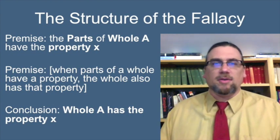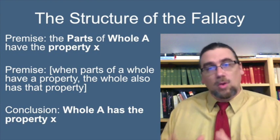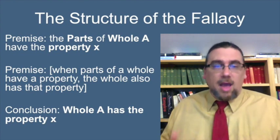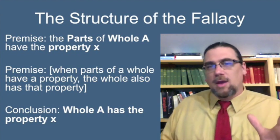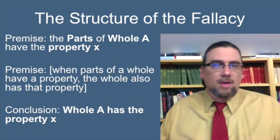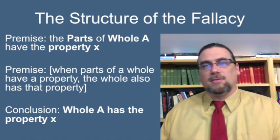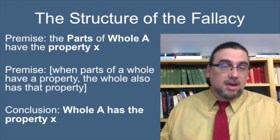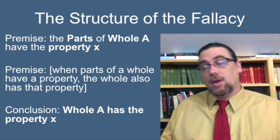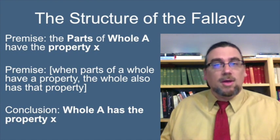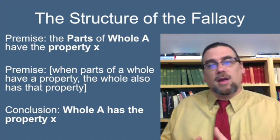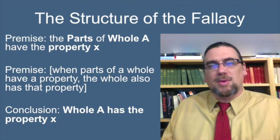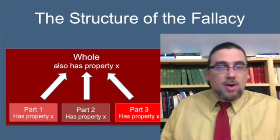The first explicit premise is: the parts of whole A have property X. The conclusion is: whole A has property X. What gets us there is that middle implicit premise, and if that premise fails, the argument fails. This is what we call an unsound deductive argument as framed here. It could also be a non-cogent inductive argument if reformulated to introduce probability or likelihood, but that gets more complex than we need to address right now.